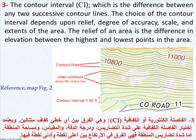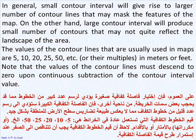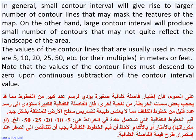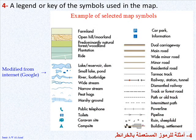The relief of an area is the difference in elevation between the highest and lowest points in the area. In general, a small contour interval will give rise to a larger number of contour lines that may mask the features of the map. On the other hand, a large contour interval will produce a small number of contours that may not quite reflect the landscape of the area. The values of the contour lines that are usually used in maps are 5, 10, 20, 25, 50, etc., in meters or feet. Note that the values of the contour lines must descend to 0 upon continuous subtraction of the contour interval value, as well as a legend or key of the symbols used in the map.